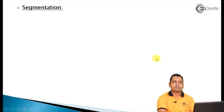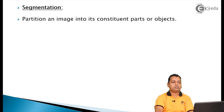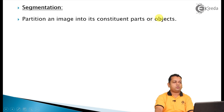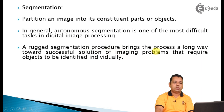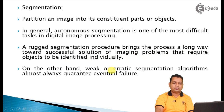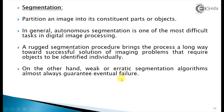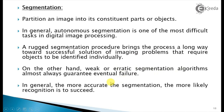The next fundamental step is image segmentation — the partitioning of an image into its constituent parts based on certain similarity constraints. In general, automatic segmentation is one of the most difficult tasks in digital image processing. A robust segmentation procedure brings the process a long way toward successful solution of imaging problems. Weak or erratic segmentation algorithms almost always lead to eventual failure.